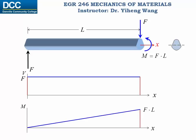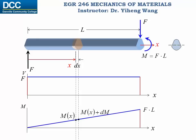If we decide to analyze a segment at an arbitrary position x, and the segment has a thickness of dx, according to our bending moment diagram, on the left-hand side its bending moment is M_x, and on the right-hand side its bending moment is M_x plus dM. Since we have already learned the flexure formula, we can determine the normal stress distribution on both left and right sides of this segment.